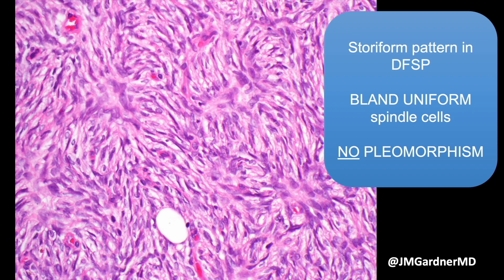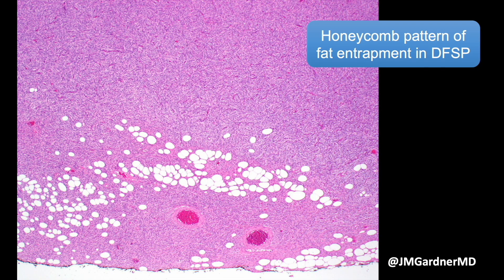There was also a case report published by some authors in Spain a few years back showing a DFSP that transformed into a high-grade pleomorphic tumor — looking like undifferentiated pleomorphic sarcoma. I was shocked by that, but they had molecular evidence and proved it. If I had just seen the slides I would never have imagined it was a DFSP, but with molecular proof it can happen — it's really, really rare.